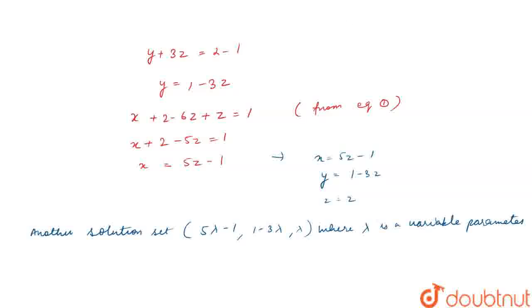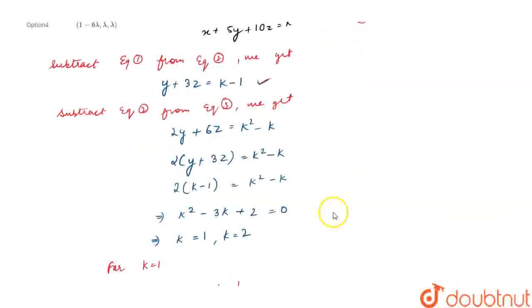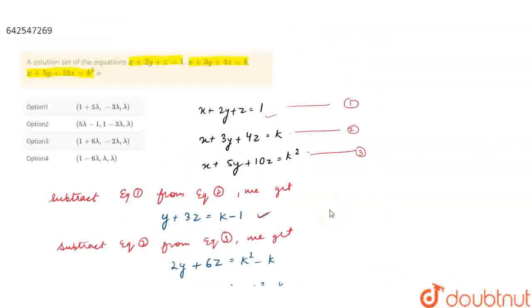We get two solution sets. Checking the options: option 1 is (1 plus 5λ, minus 3λ, λ), which is one of our solutions — correct. Option 2 is (5λ minus 1, 1 minus 3λ, λ), which is also our solution. Both options are correct. This is our required answer. Thank you.